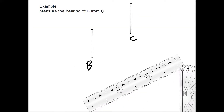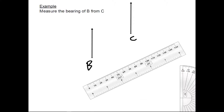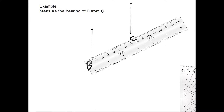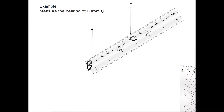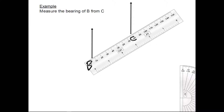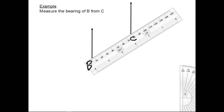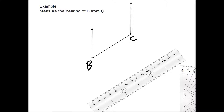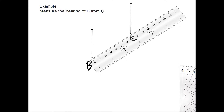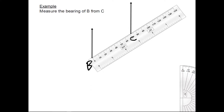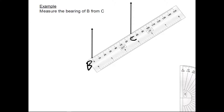Here's another example. You want to measure the bearing of B from C. I'm first going to draw a straight line between B and C. So there's my straight line between B and C.